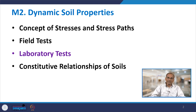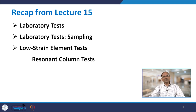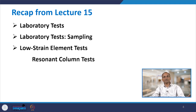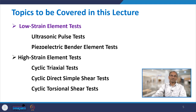There are a total of 3 lectures on laboratory tests. This is the second one. In lecture 15, we discussed sampling for laboratory tests and introduced low strain element tests, covering only the resonant column apparatus (RCA). Today in lecture 16, we will cover two more low strain element tests: the ultrasonic pulse test and the piezoelectric bender element test, followed by high strain element tests.